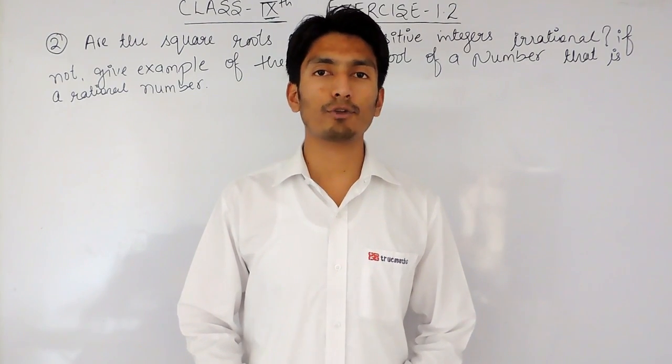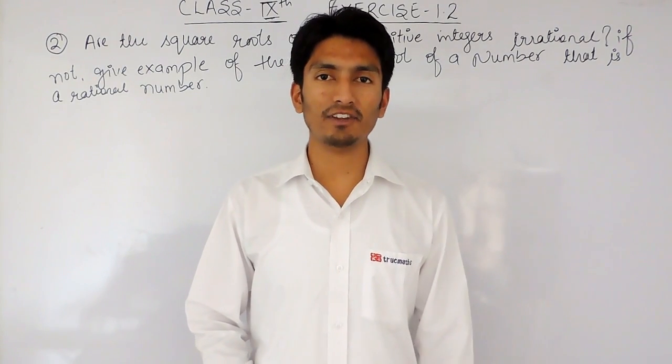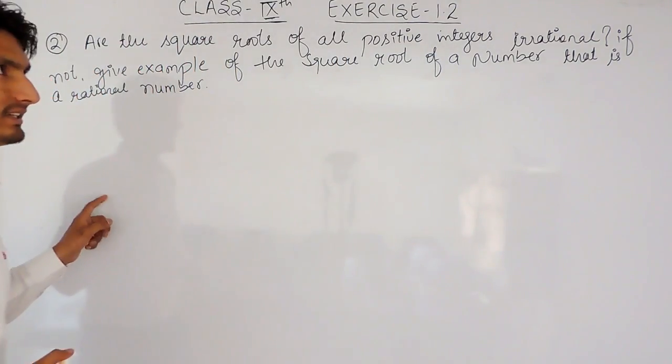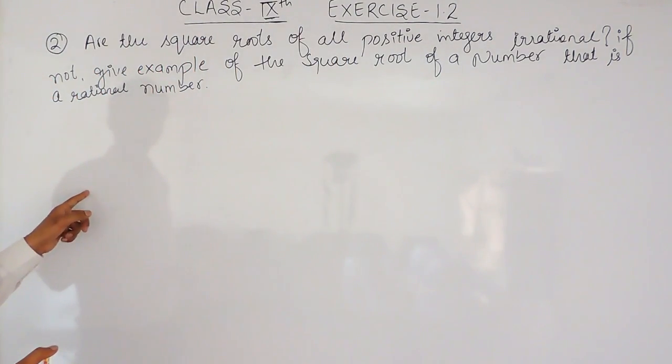Hello everyone, we are from True Maths and in this video we are going to solve the second question of this exercise. The question asks: are the square roots of all positive integers irrational? If not, give examples of the square root of a number that is a rational number.